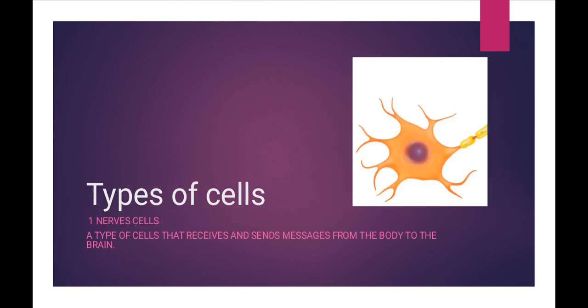Now we study types of cells. The first type we will discuss is nerve cells. A type of cell that receives and sends messages from the body to the brain. Yeh woh cells hote hain jo receive aur send karte hain messages hamare body se brain tak. For example, when we touch something – a table or a chair – our cells immediately send a message to the brain and we feel that object.